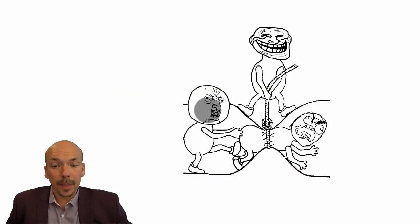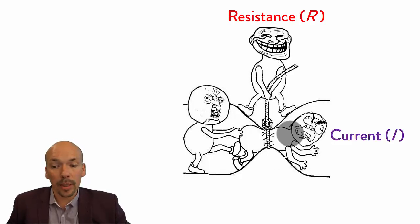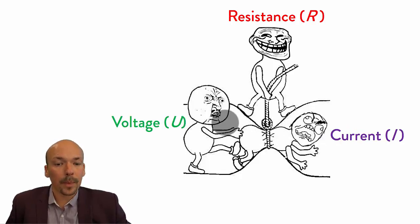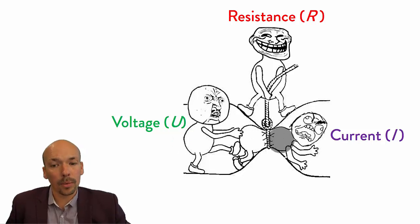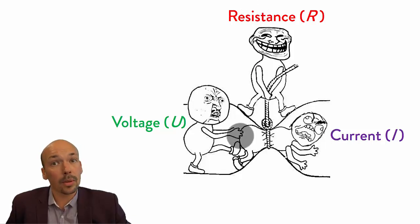This is also shown by this meme: we have three quantities, and one of them — the resistance — is blocking the current. The voltage is what's trying to push the current through. So the higher the voltage, the better the current will flow. But if the resistance is even bigger, the current will have trouble. And if the resistance is very low, the current will have no trouble going through.